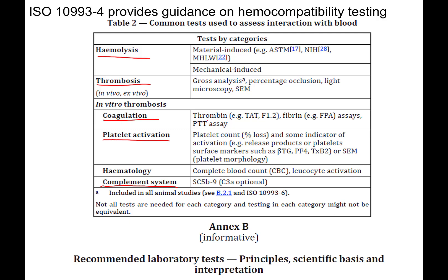We can look for specific proteins associated with the coagulation cascade using ELISA measurements. ELISA can also be used to look for complement activation — specifically looking for proteins associated with the complement cascade. For platelet activation, we can look for release products from activated platelets using ELISA, or look at platelet attachment using microscopy. Scanning electron microscopy is a good tool for that.